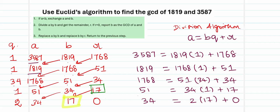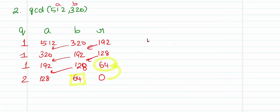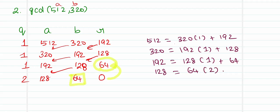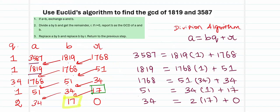Make yourself comfortable writing the given elements in the order of the division algorithm. We will quickly look at the second problem. 512 = 320 × 1 + 192. Next, 320 = 192 × 1 + 128. Then 192 = 128 × 1 + 64. And finally, 128 = 64 × 2 + 0. The last non-zero remainder is 64, which is our GCD. In the last problem, the last non-zero remainder which is 17 is our GCD.